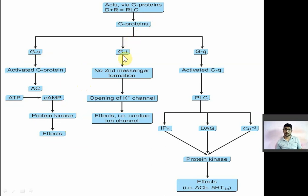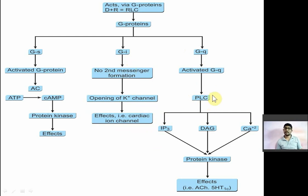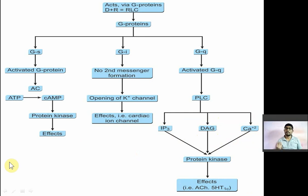If drug combines with G-protein and activates G-inhibitory protein, they will directly attach to an ion channel, open the potassium ion channel, cause hyperpolarization, and produce an inhibitory effect — mostly associated with cardiac ion channels. If G-Q protein is activated, it will activate phospholipase C enzyme, which breaks down PIP2 into IP3 (inositol phosphate-3), diacylglycerol (DAG), and calcium.